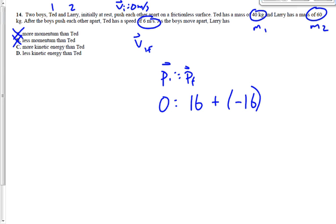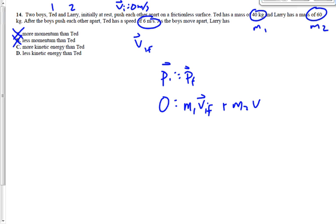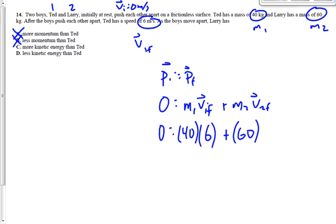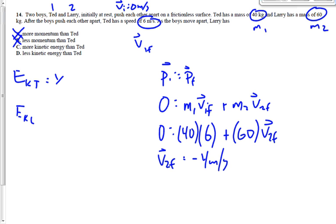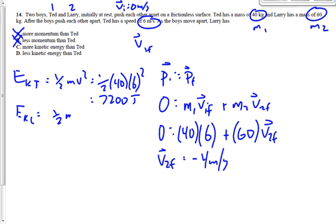So I think what we need to do here is find his speed and find the kinetic energy of both of them and then compare their kinetic energies. Let's do conservation of momentum first. Zero initial momentum equals M1V1F plus M2V2F. We've got 40 kilograms times V1F of 6 meters per second, plus 60 kilograms times V2F. V2F is going to work out to be negative 4 meters per second. I still don't have my answer, but now at least I can find the kinetic energy of Ted and the kinetic energy of Larry.